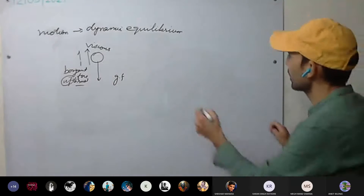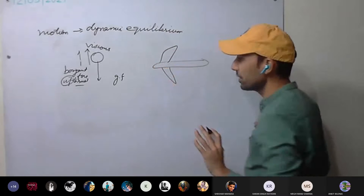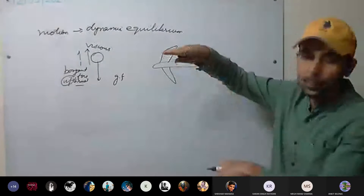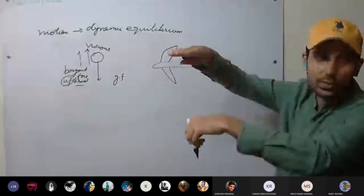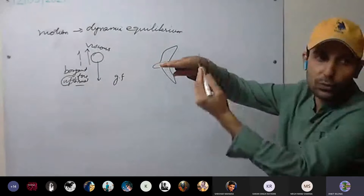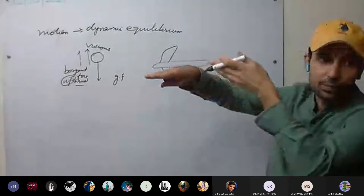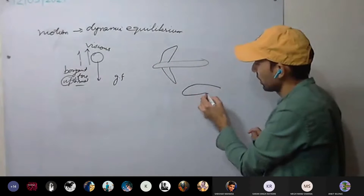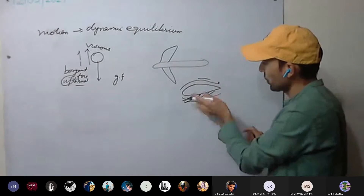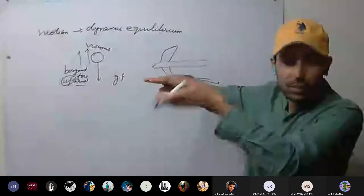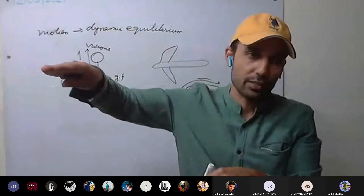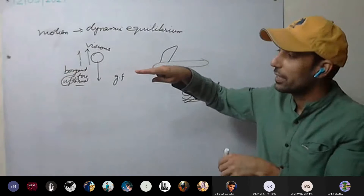You have seen a plane flying. When it is in the air at a constant height, the downward force is the weight of the plane, and the upward force is the uplift force from the wings. These are balanced — that is why it remains at constant height. So the plane is said to be in dynamic equilibrium.